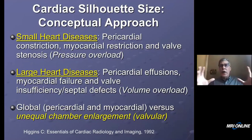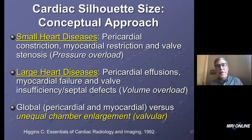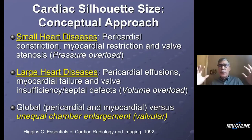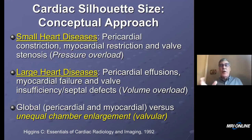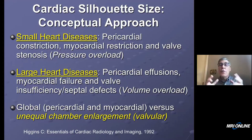Going back to our concept map: small heart disease, large heart disease, and it refers to outside the end — pericardial, myocardial, and valvular. In small heart disease with valvular, we're often talking about stenosis. With large heart disease with valvular and septal, we're often talking about volume overload or insufficiency.